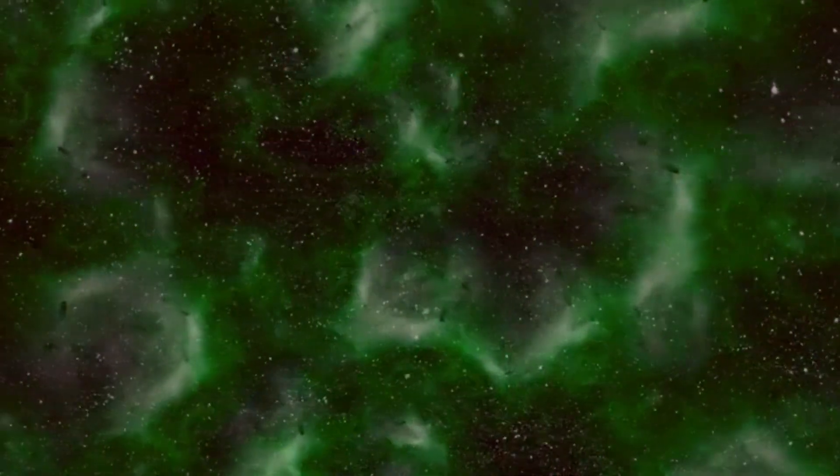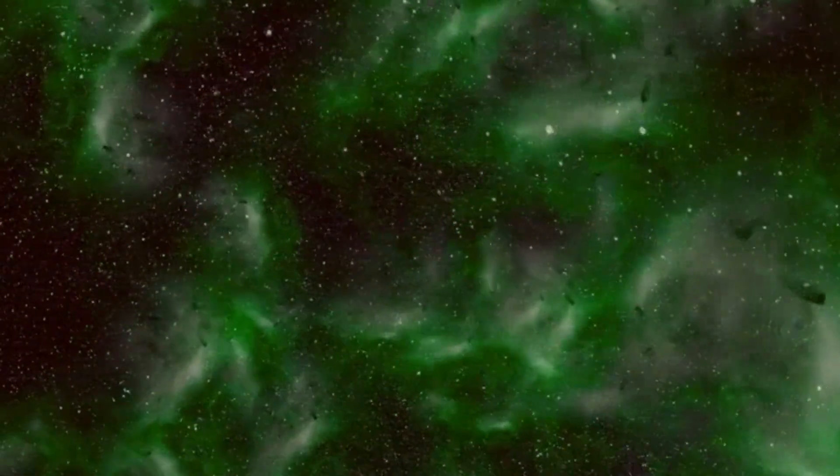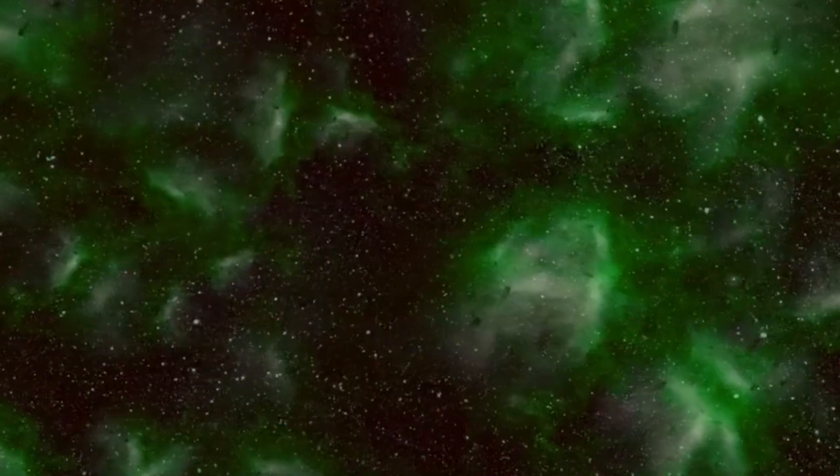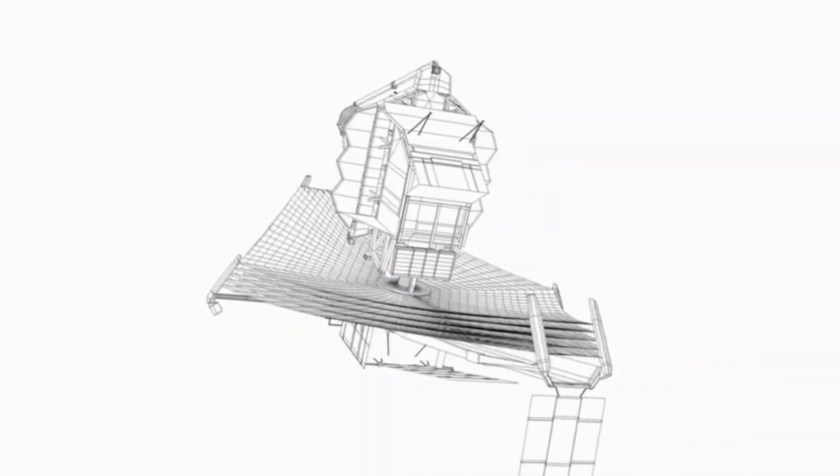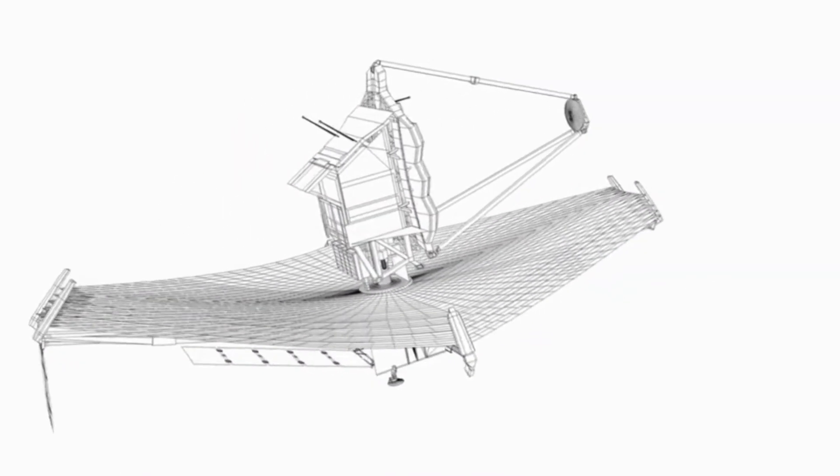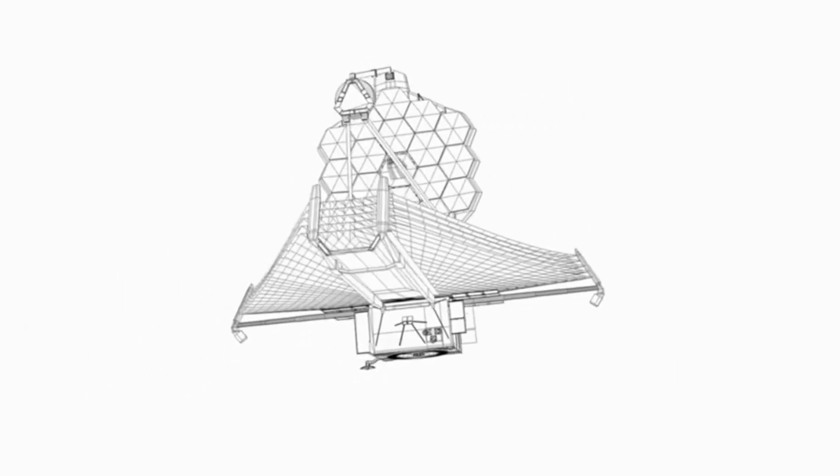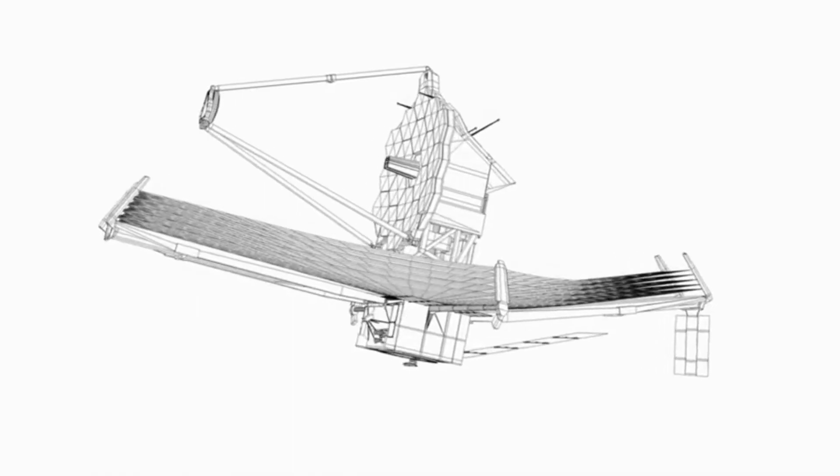What makes the James Webb Space Telescope such a powerful tool is its ability to detect the faint chemical signatures of elements like water vapor in distant celestial objects. Unlike previous telescopes, which primarily observed visible light, the James Webb Space Telescope was designed to detect light in the infrared spectrum. Infrared light, with its longer wavelengths, can penetrate dust clouds and reveal objects that are otherwise invisible to the naked eye.